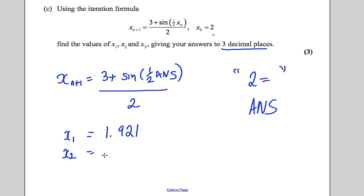x2 would be equal to, rounding correctly, 1.910. And x3 would be equal to 1.908. And you're done.